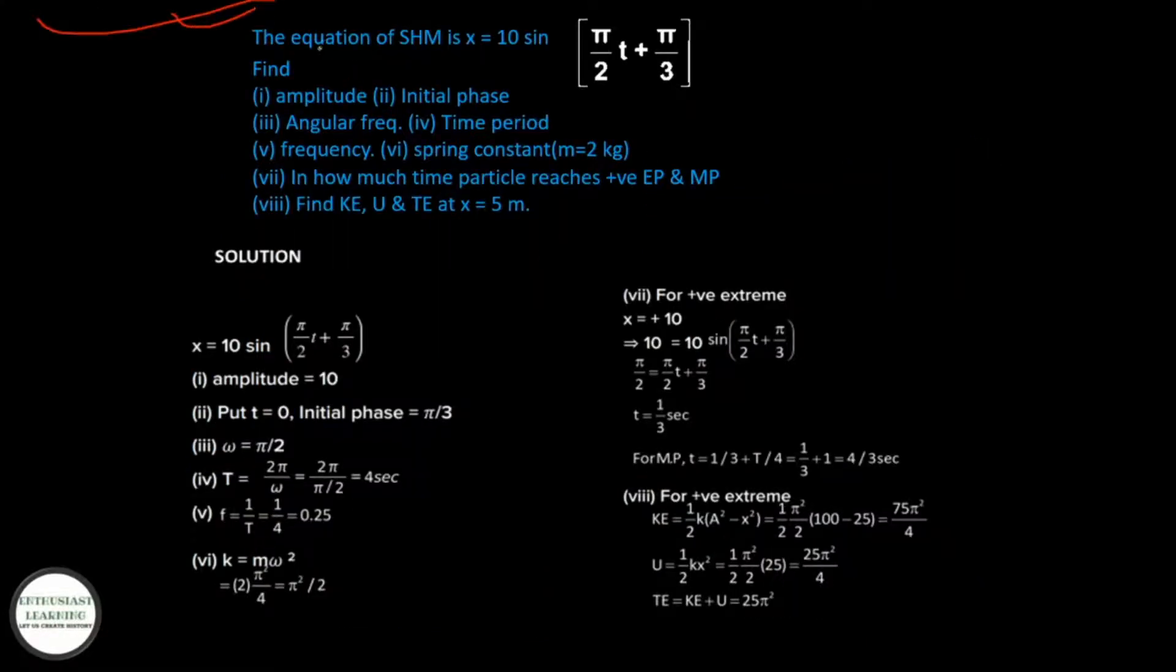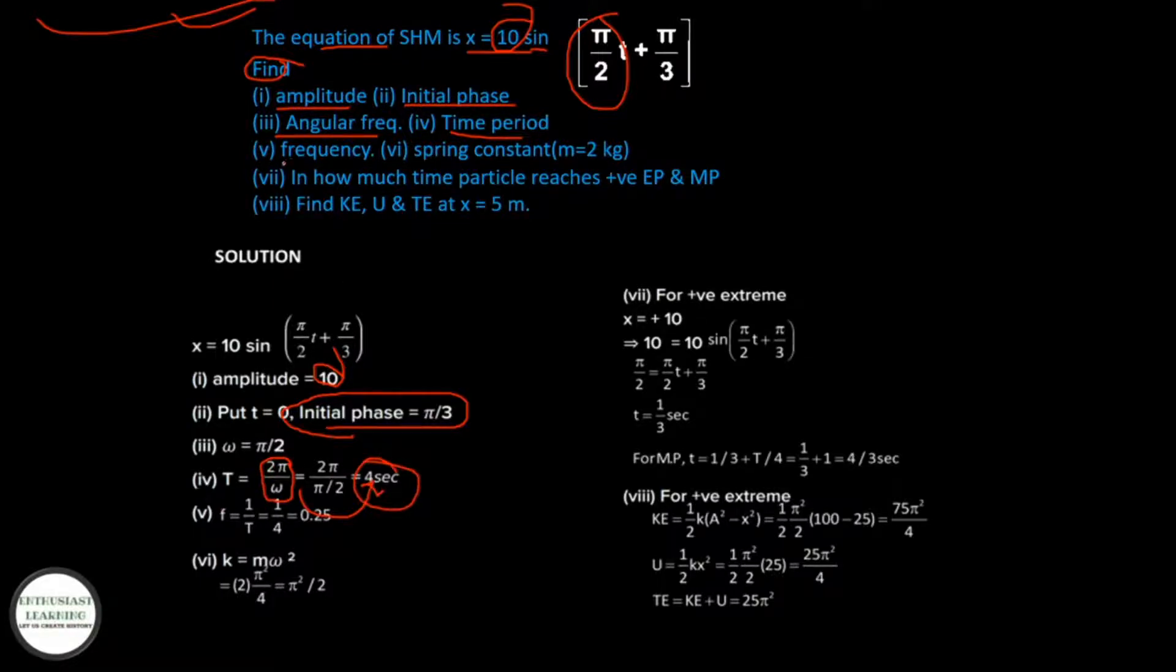Now question: the equation of SHM is x = 10 sin((π/2)t + π/3). We have to find: (i) amplitude = 10, (ii) initial phase = π/3, (iii) angular frequency ω = π/2, (iv) time period T = 2π/ω = 4 seconds, (v) frequency f = 1/T = 0.25 Hz, (vi) spring constant where mass is 2 kg: k = mω² = π²/2.